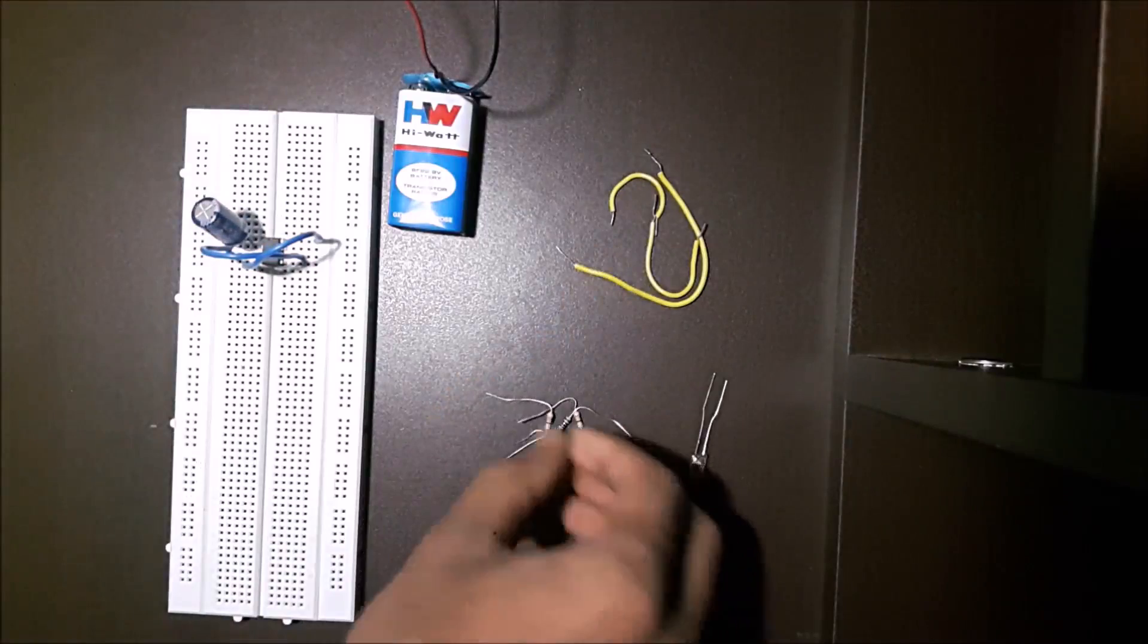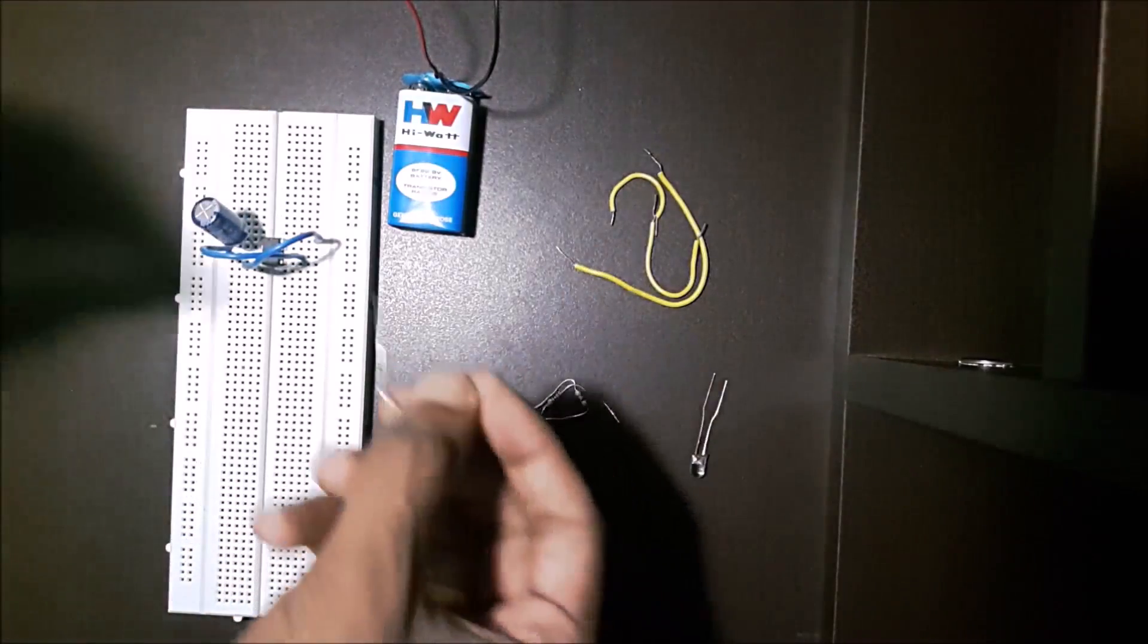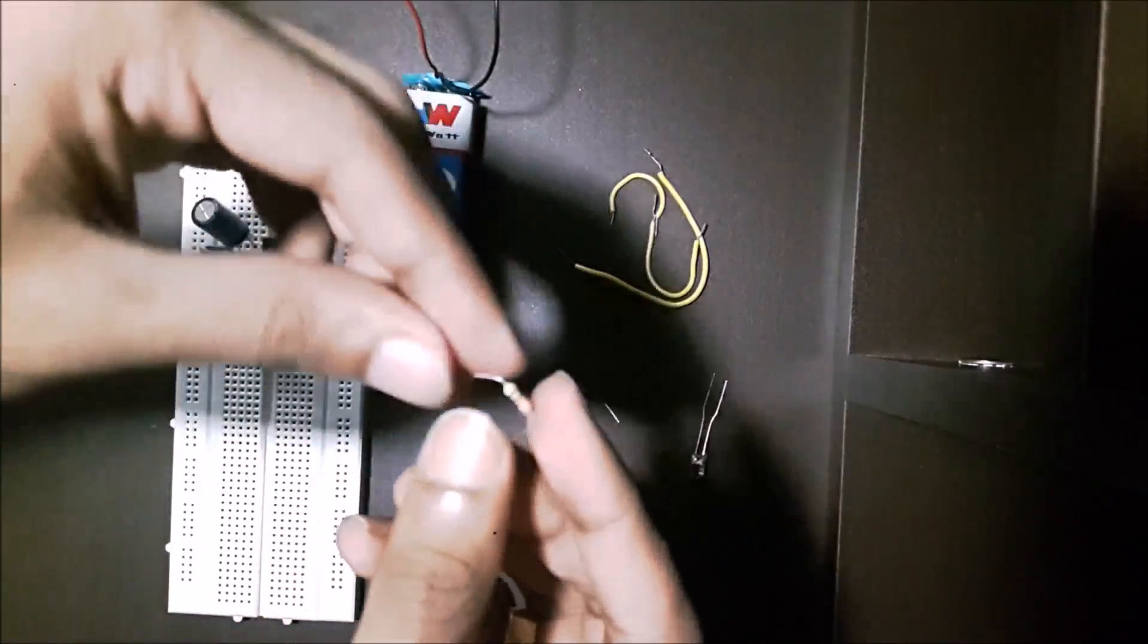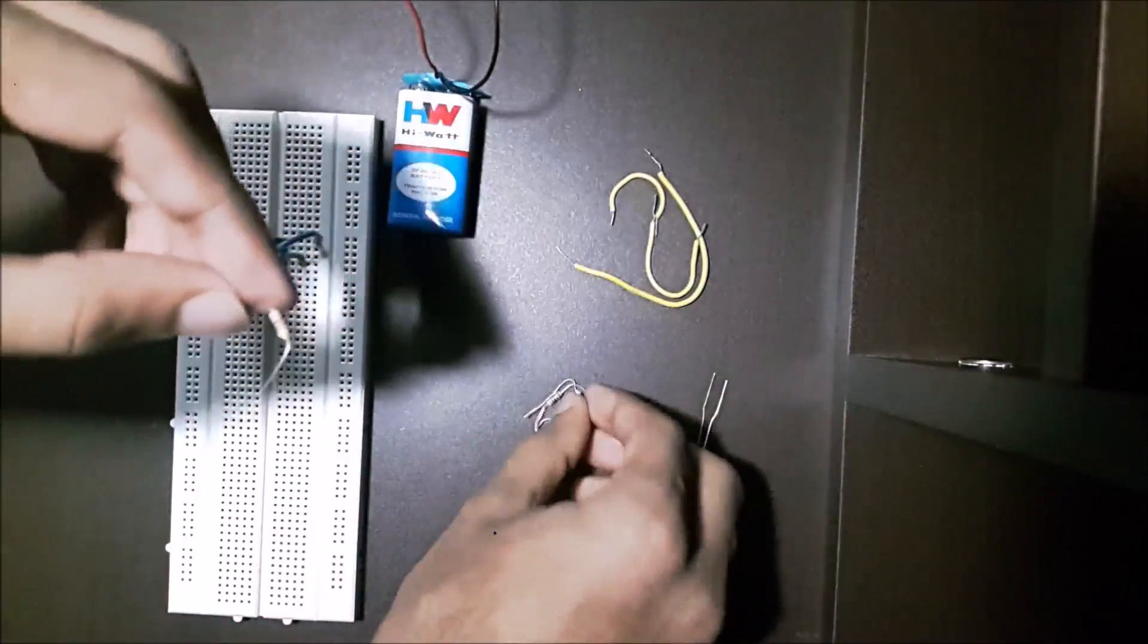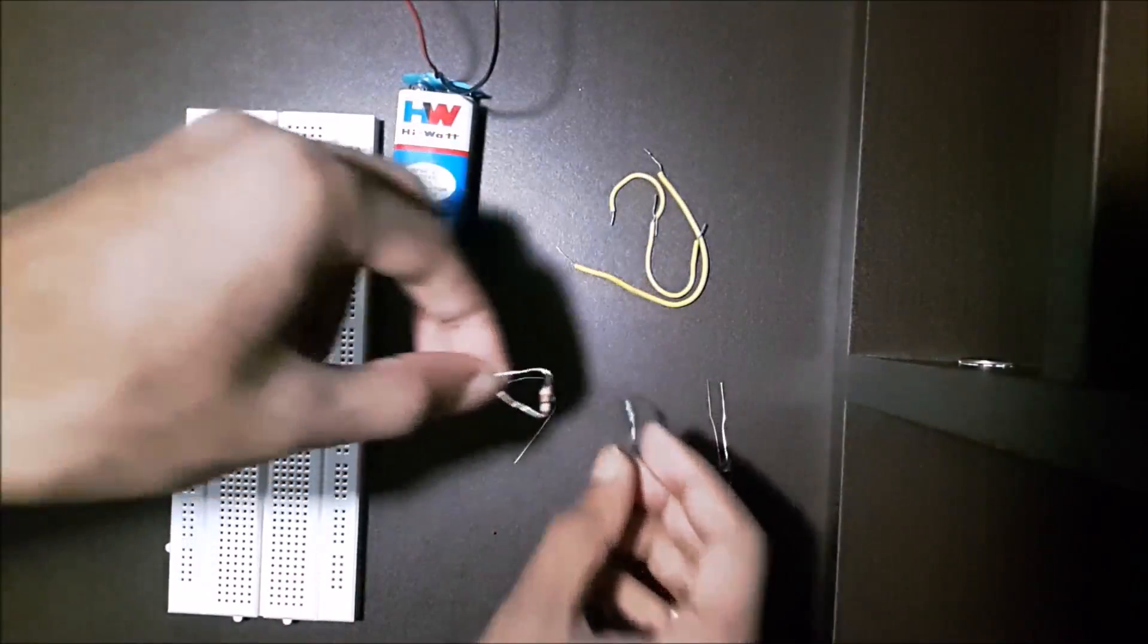Then connect a 330 ohm resistor between pin 6 and pin 7 on the 555 timer IC.